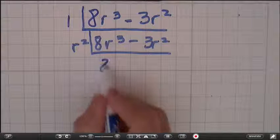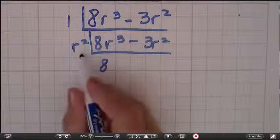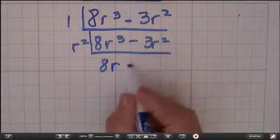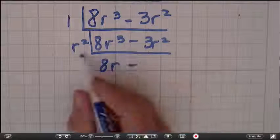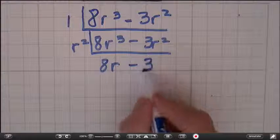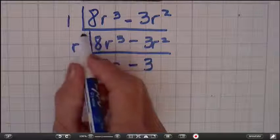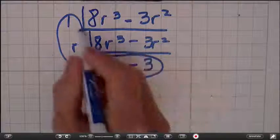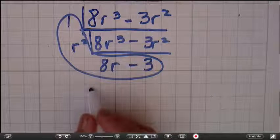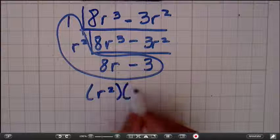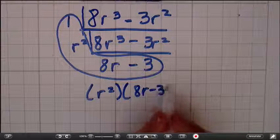So we're going to take 8r cubed divided by r squared is r. r squared divided by r squared is 1, so it's negative 3. So when we go ahead and we go to write it in proper notation, it's r squared times 8r minus 3.